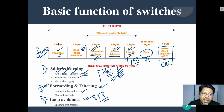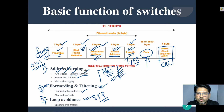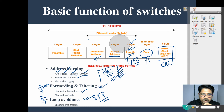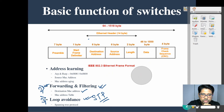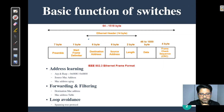We'll see the complete lab and understand how to identify preamble, delimiter, source MAC, destination MAC, and the type field — the two-byte type that carries the 0101 pattern for synchronization at the receiver side. Any questions before we move to the lab?